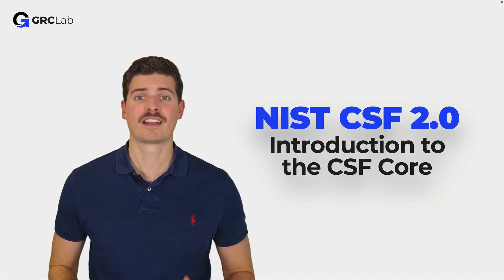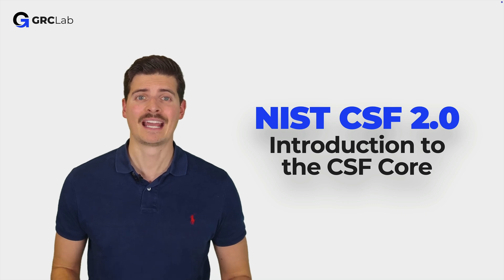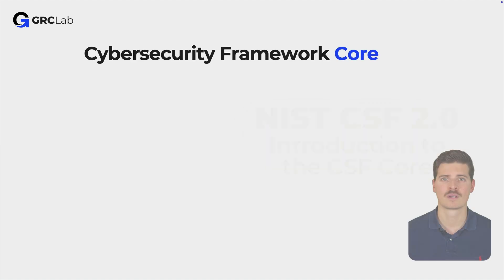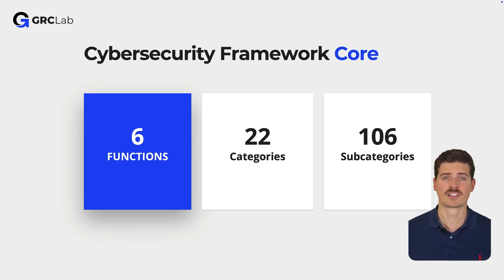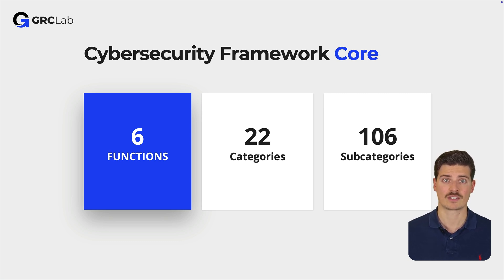Throughout this lecture we will explore the fundamental components of the CSF Core, its structure and how it can help organizations in improving their cybersecurity posture. The CSF Core is divided into six functions that represent the highest level of organization within the framework. Each function is further divided into 22 categories, which are groups of cybersecurity outcomes closely related to each other. The categories are then divided into 106 subcategories, providing specific outcomes of technical and management activities.